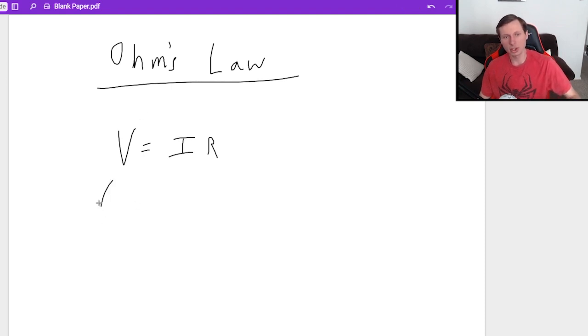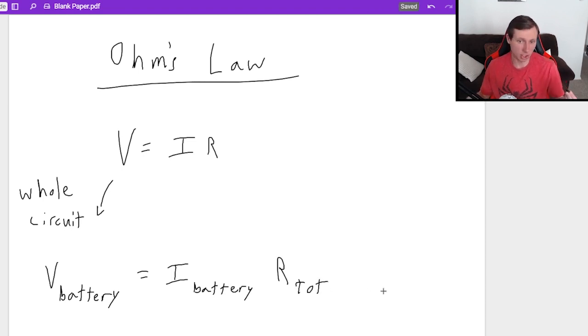The first way is you can say that the whole circuit, in other words, what we're saying is the voltage of the battery, which is almost always the voltage supply, is equal to the current coming out of the battery times the resistance, not coming out of the battery, but the total resistance in the circuit.